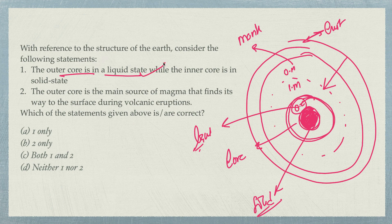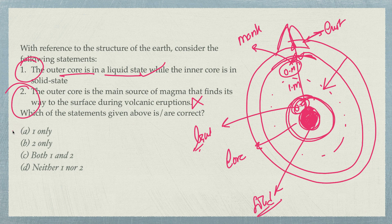Statement two says the outer core is the main source of magma that finds its way to the surface during volcanic eruptions. This is the wrong statement. Magma mostly comes from the asthenosphere or the upper mantle — not from the outer core. The earth's radius is about 6,200 km. So statement one is right and statement two is wrong.